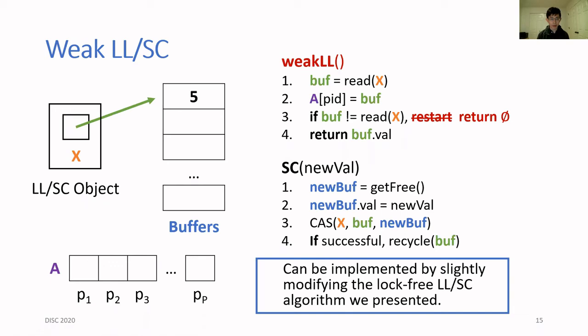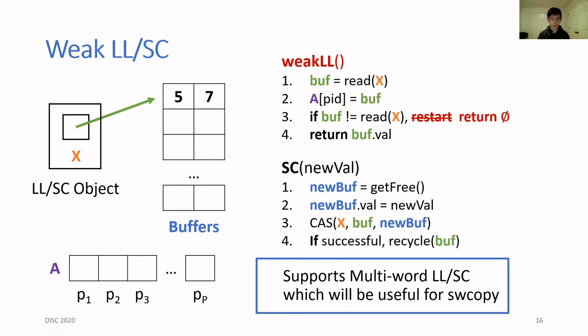A failed weak LL returns a special value indicating that it failed. This definition is actually weaker than previous definitions which require that a failed LL operation return the process ID of the SC operation that made it fail. However, by being less restrictive, this version of weak LL can be implemented more efficiently and with better theoretical properties. Weak LL is actually very easy to implement by starting with the lock-free algorithm presented earlier and then making some small changes.